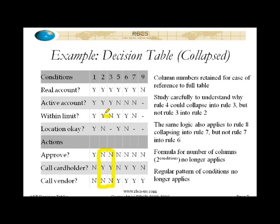Well, that's not true, because that would erase the distinction between rule number two and rule number one, right? And obviously, rule number two and rule number one are quite different. They're almost opposite in their outcomes — they are opposite in terms of approval. One results in decline and a call to cardholder, and the other results in approval and no call to cardholder. So you have to be very careful about collateral damage, if you will.